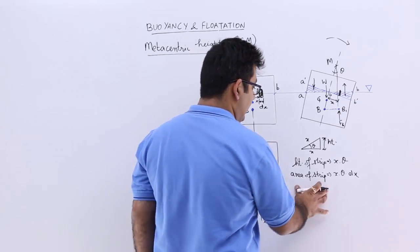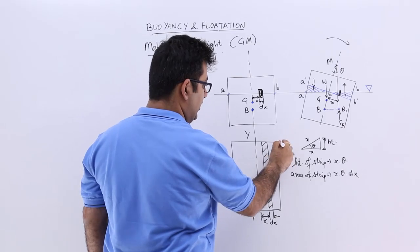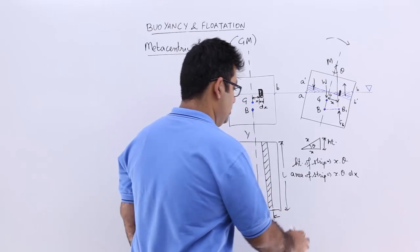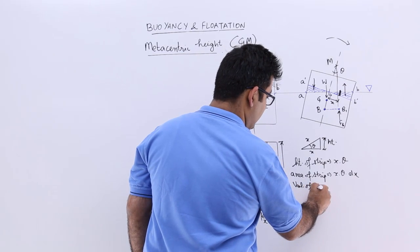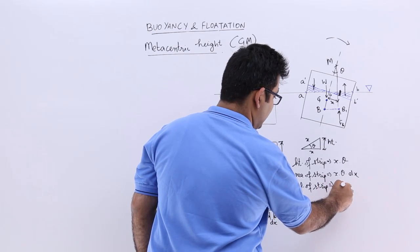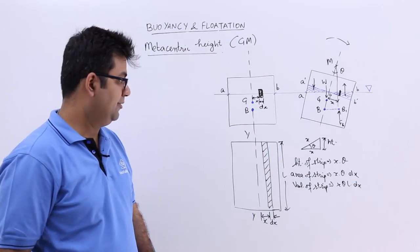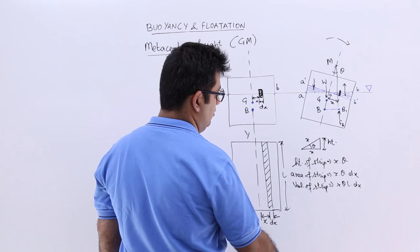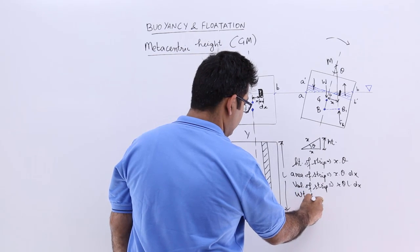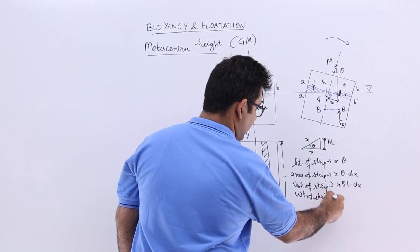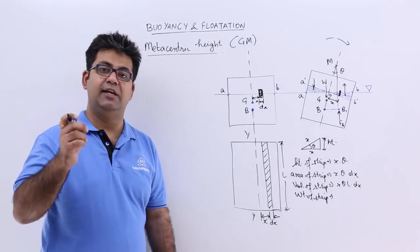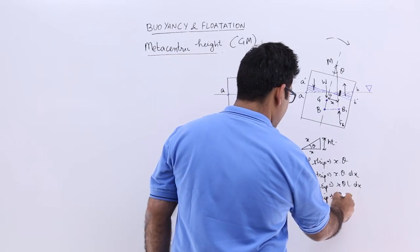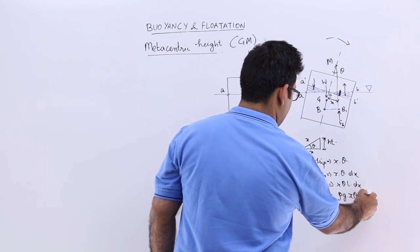Volume would be area into length. If you go toward the z-axis, you get the length l in the plan. So volume of the strip = x·theta·l·dx. The weight of the strip is the specific weight of the liquid into the volume of the strip, giving rho·g·x·theta·l·dx.